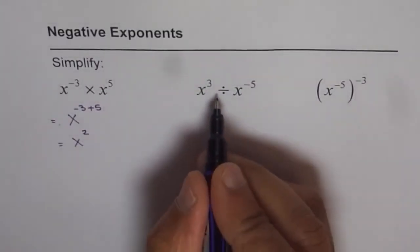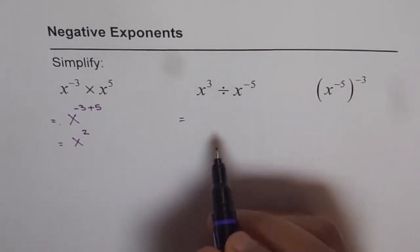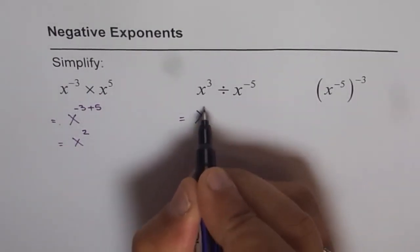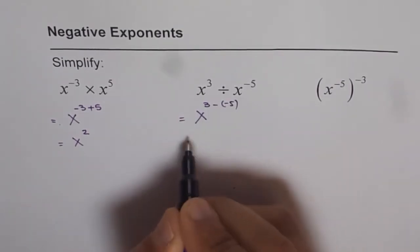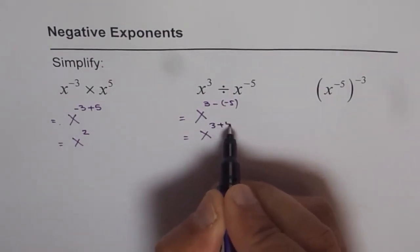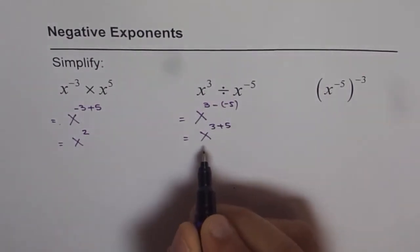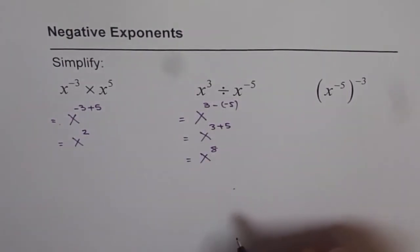Now in the second case, we are dividing. So whenever you divide, we have to subtract the exponents. We get x to the power of 3 minus -5. Now, minus and minus becomes plus, so x to the power of 3 plus 5, which equals x to the power of 8. So that is the answer.